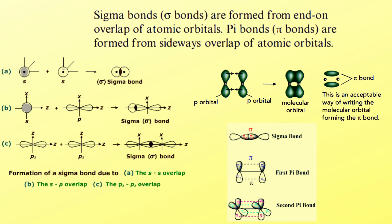Sigma bonds are formed from end-on overlap of atomic orbitals. Pi bonds are formed from sideways overlap of atomic orbitals. Sigma bonds can form from s-s, s-p, and p-p overlap. Pi bonds form from p-p overlap, and the first and second pi bonds are shown here.